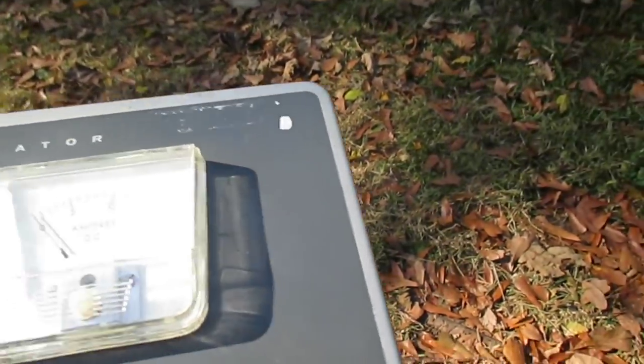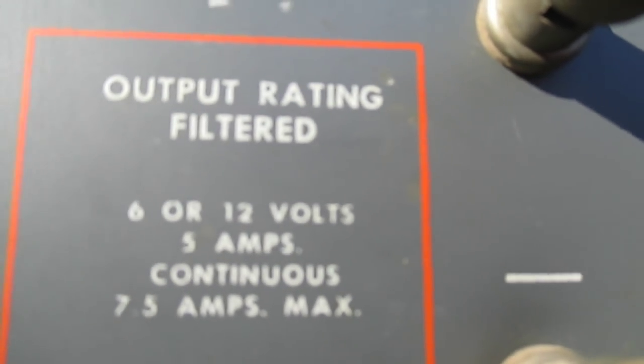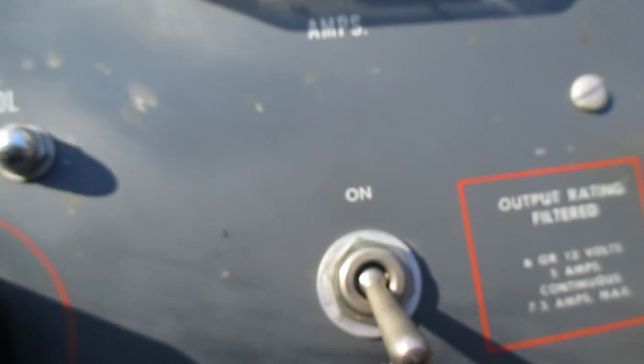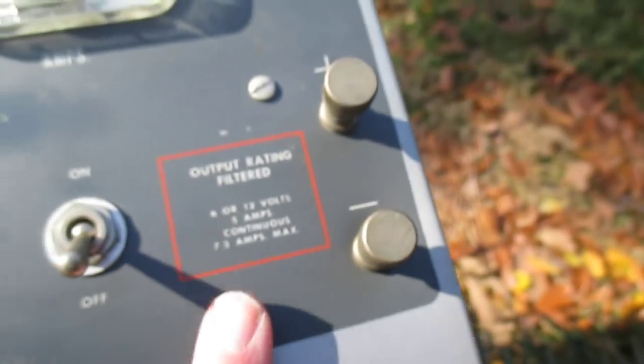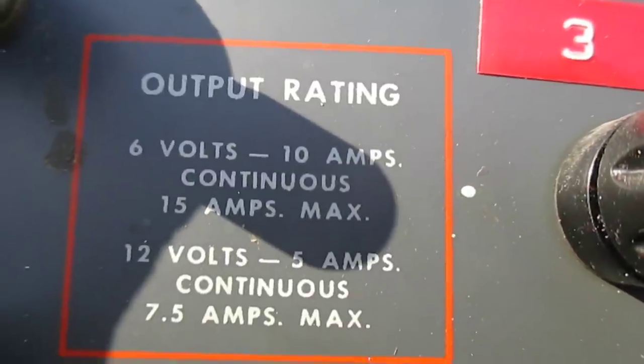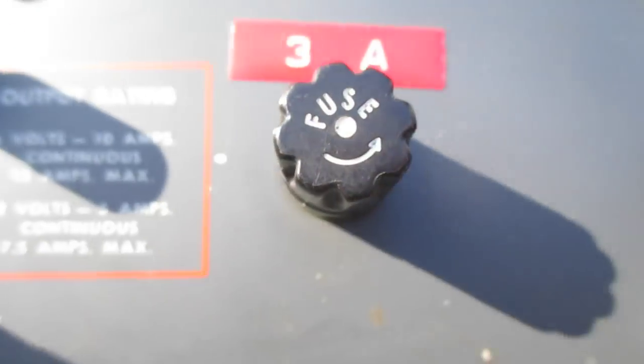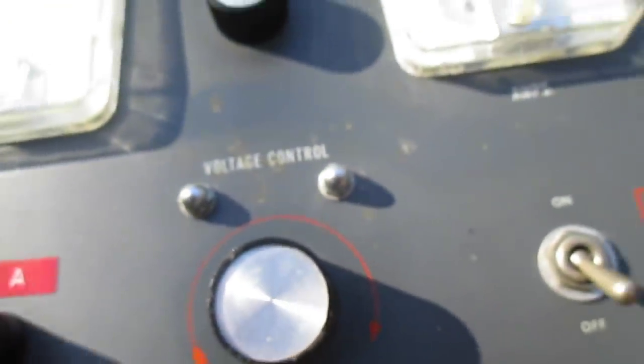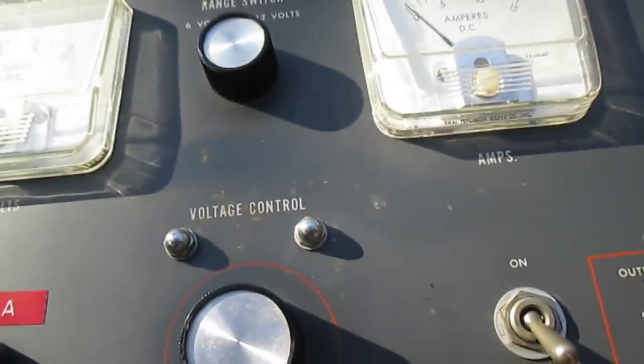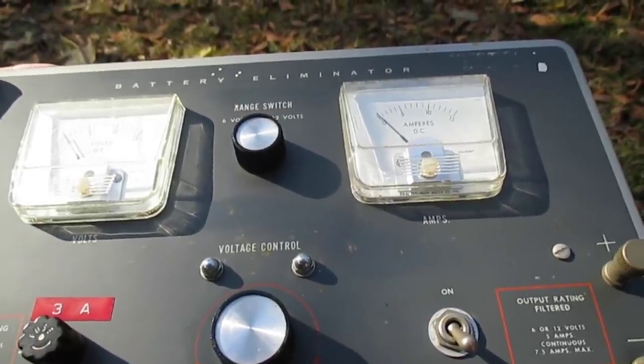This is an unregulated power supply that has an output of 6 or 12 volts, 5 amps continuous, 7.5 amps maximum on the filtered output. On the output that's not as well filtered, we have 6 volt 10 amp continuous, 15 amp maximum, or 12 volt 5 amp continuous, 7.5 amps maximum. This is completely unregulated. You're the regulator by adjusting the voltage control.